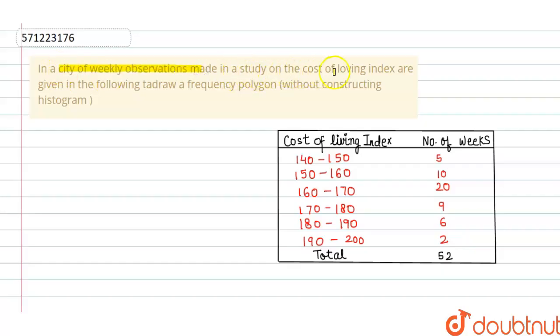The question is: In a city, weekly observations made in a study on cost of living index are given in the following table. We have to draw a frequency polygon without constructing a histogram. This is a table, so according to the question, we will use this table to solve.